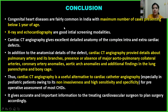Conclusion: Congenital heart diseases are fairly common in India. Maximum number of cases present below one year of age. X-ray and echocardiography are good initial screening modalities. Cardiac CT angiography provides detail of pulmonary artery and its branches, presence or absence of major aortopulmonary collateral arteries, coronary artery anomalies, aortic arch anomalies, additional findings, and the lung parenchyma and bone cage. Cardiac CT angiography is a useful alternative to cardiac catheter angiography, especially in pediatrics, due to its non-invasiveness, high sensitivity and specificity, giving accurate and important information to the treating cardiovascular surgeon to plan surgery accordingly. Thank you.